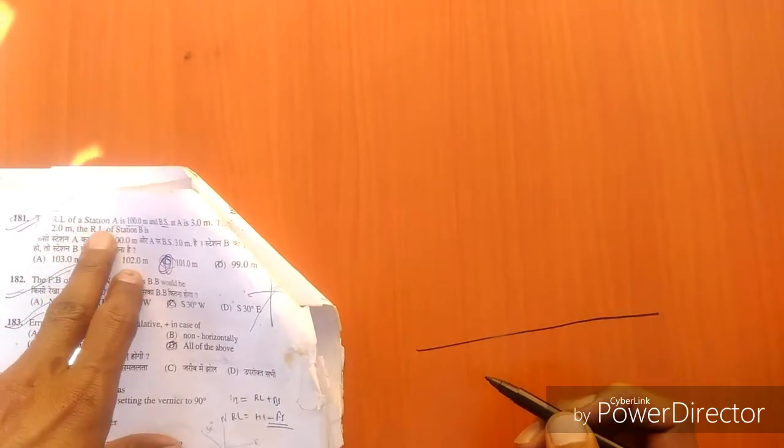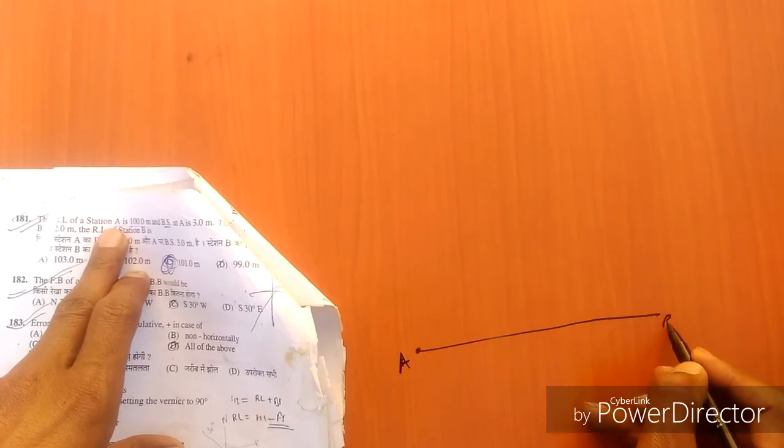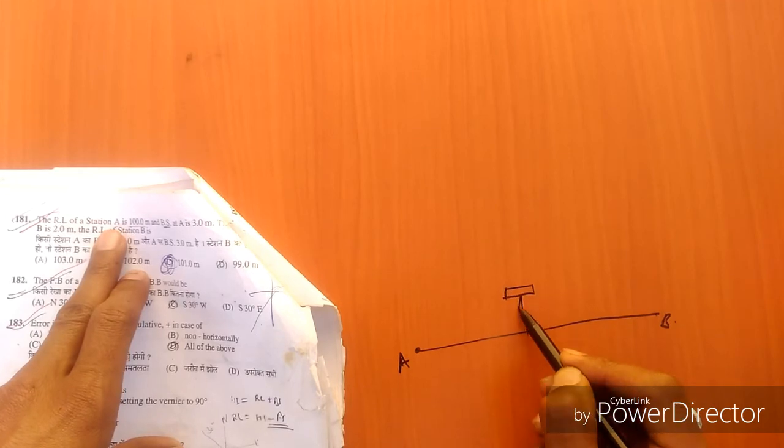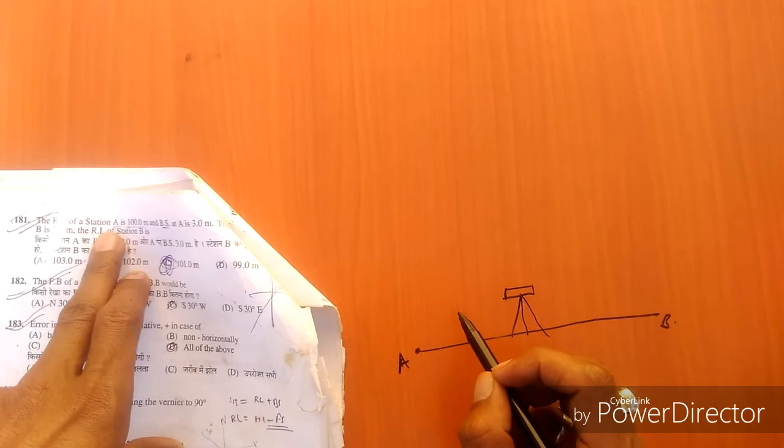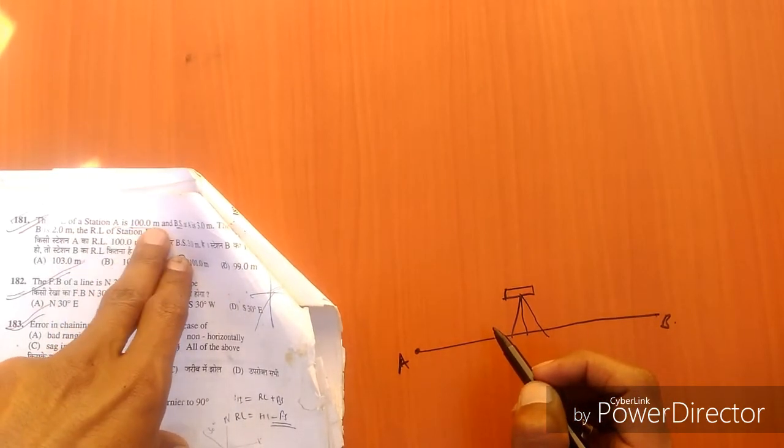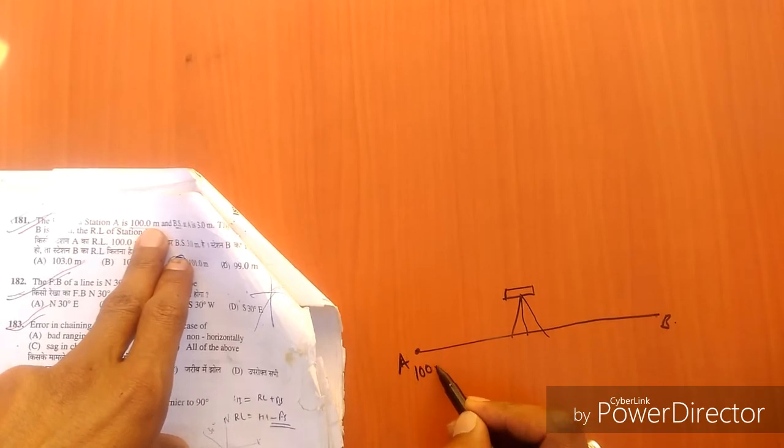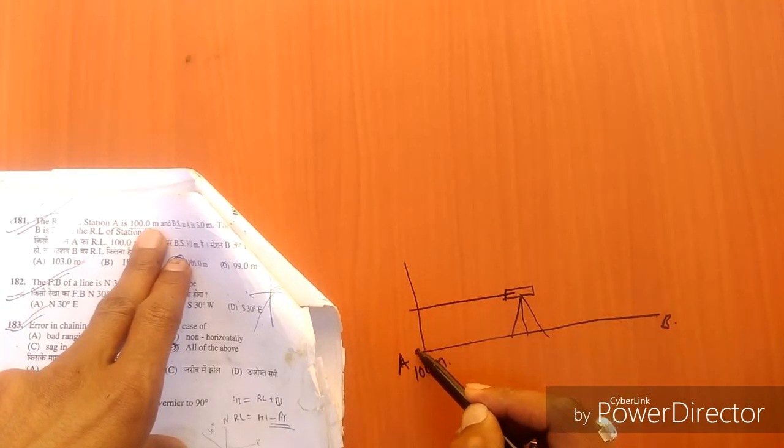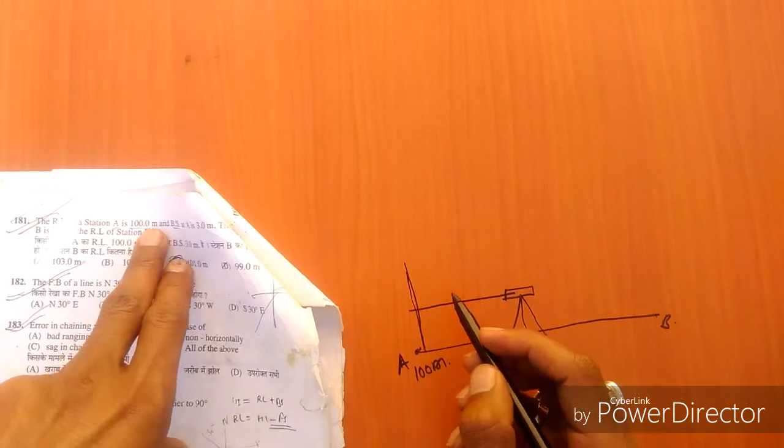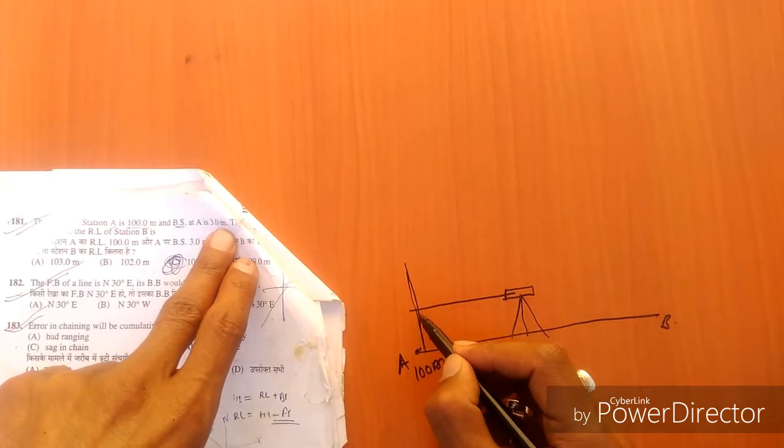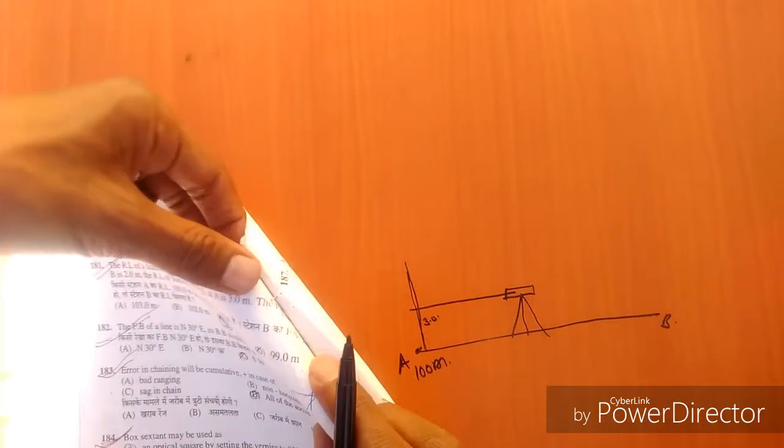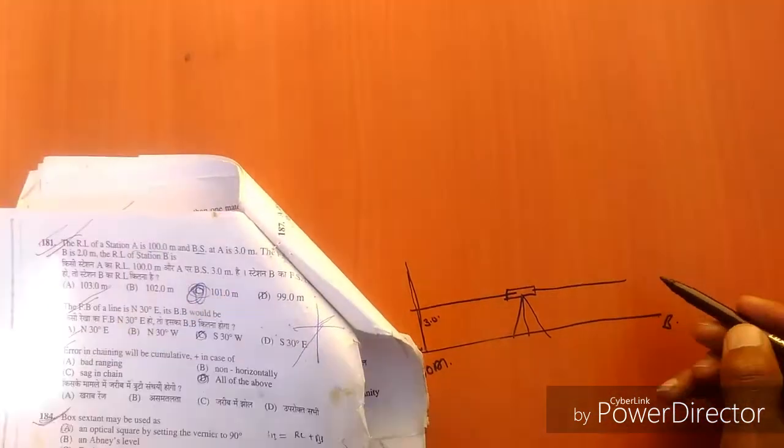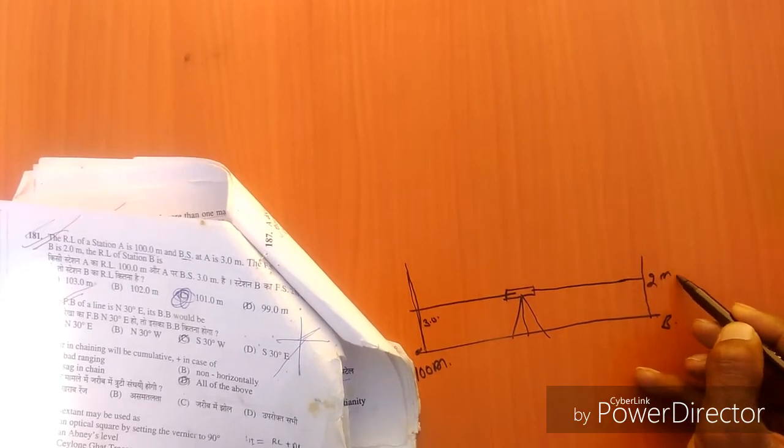The RL of station A - always the first reading is backsight. So RL of A is 100 meters. The backsight reading is 3 meters. And the foresight at B, the second reading at B station, is 2 meters.